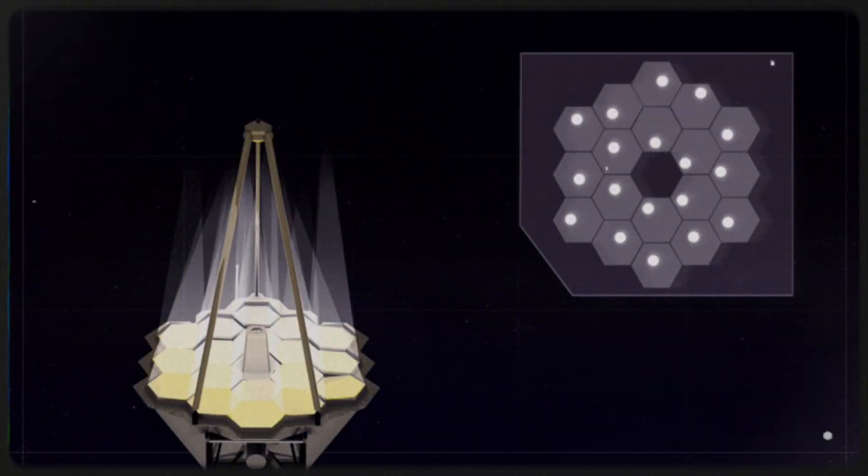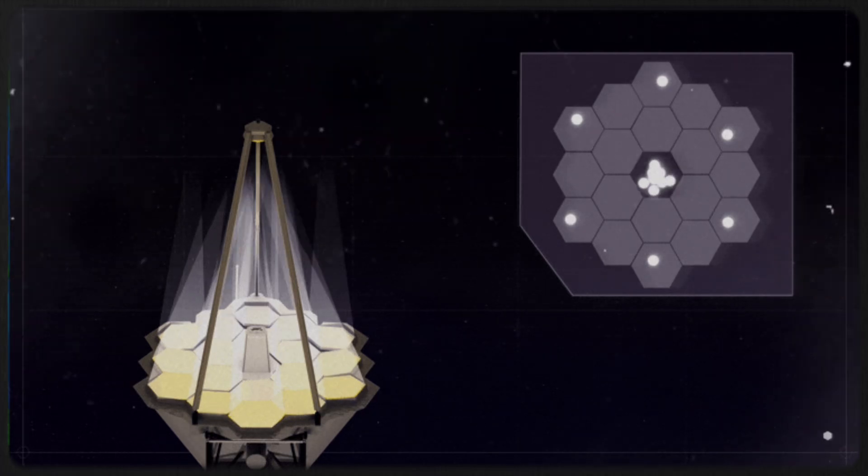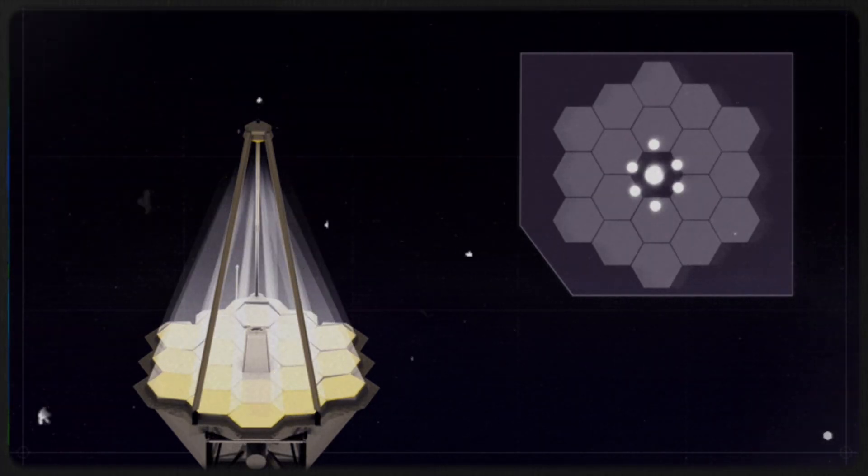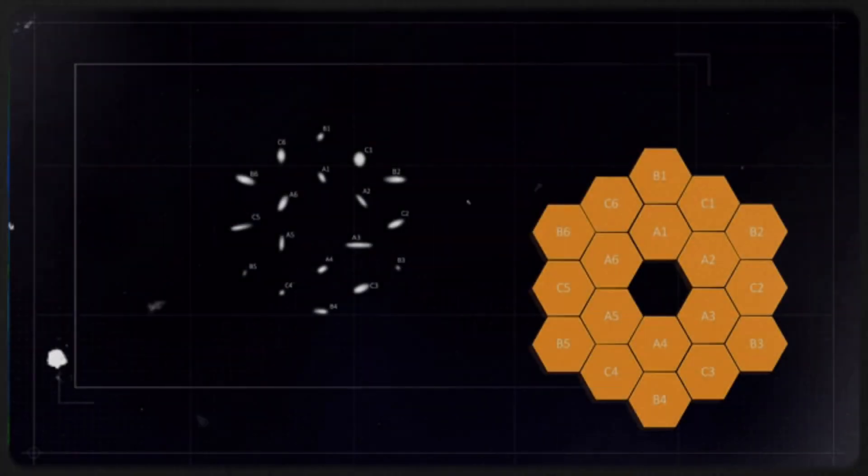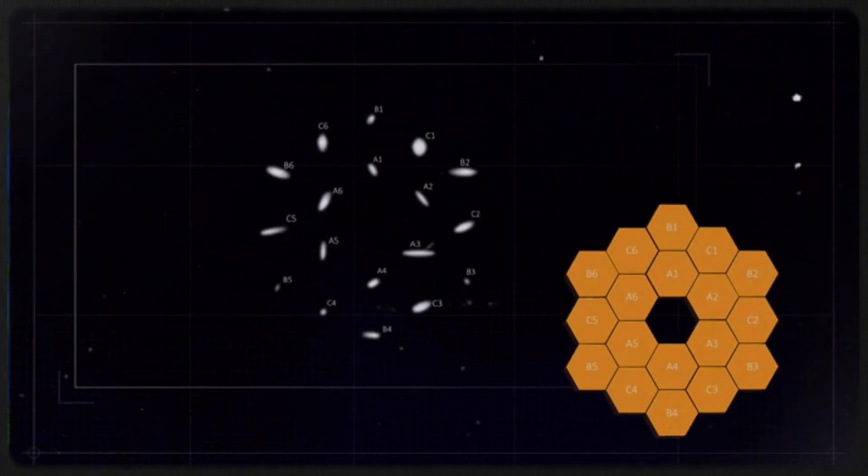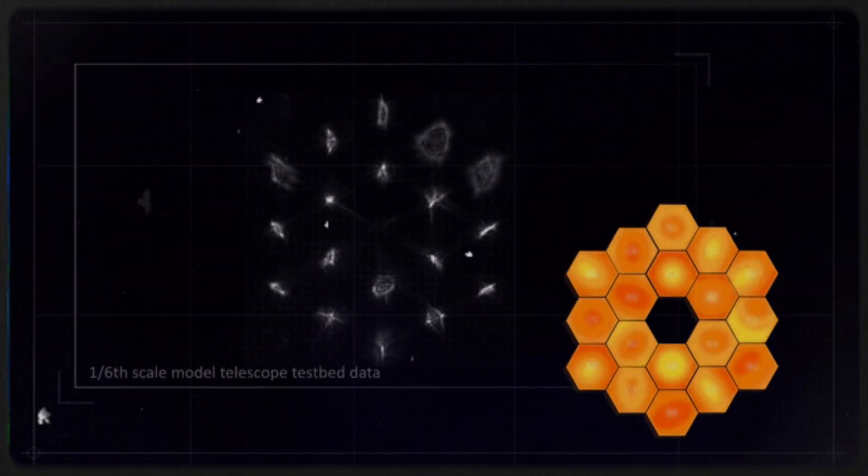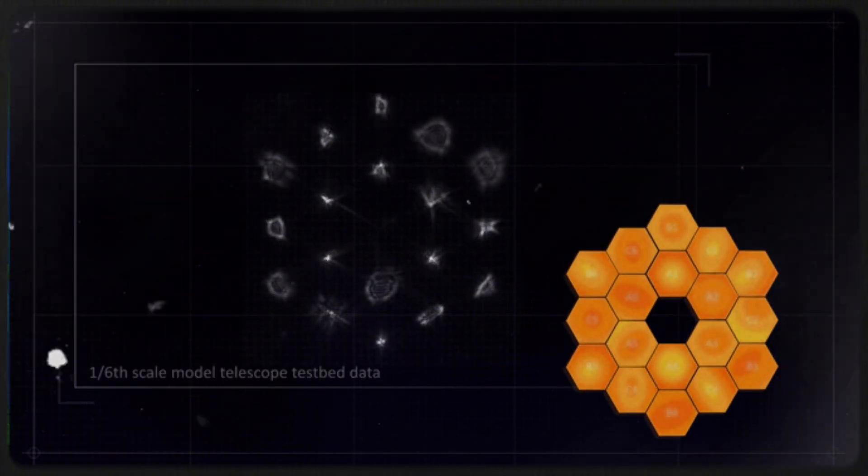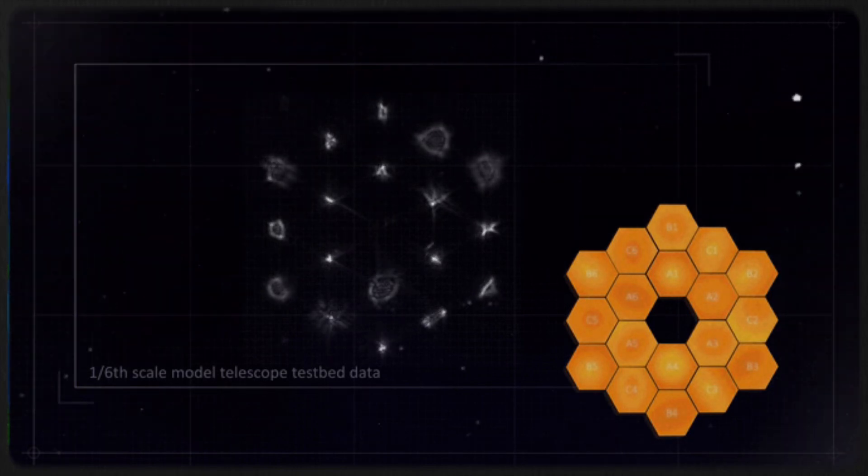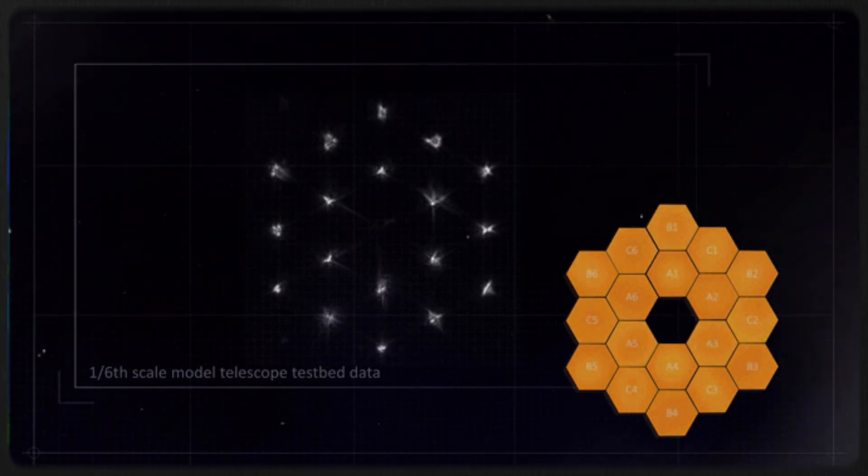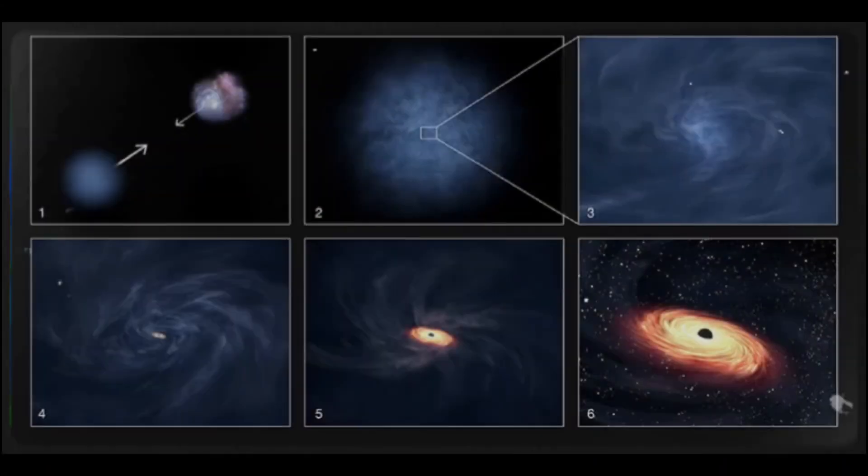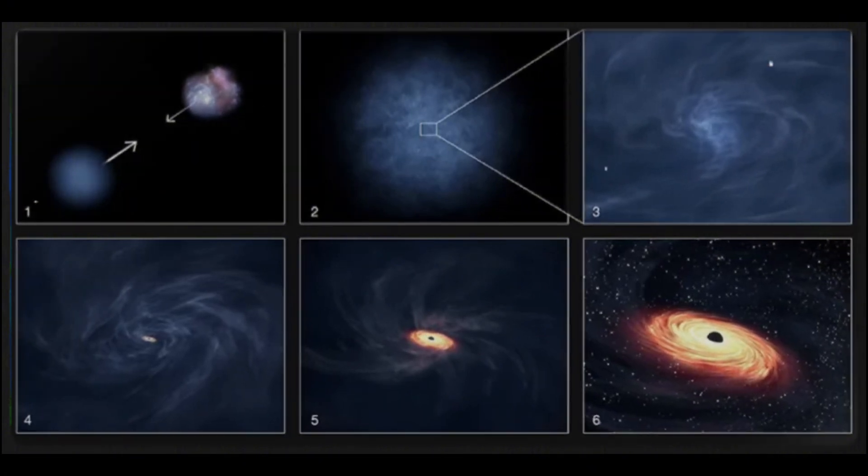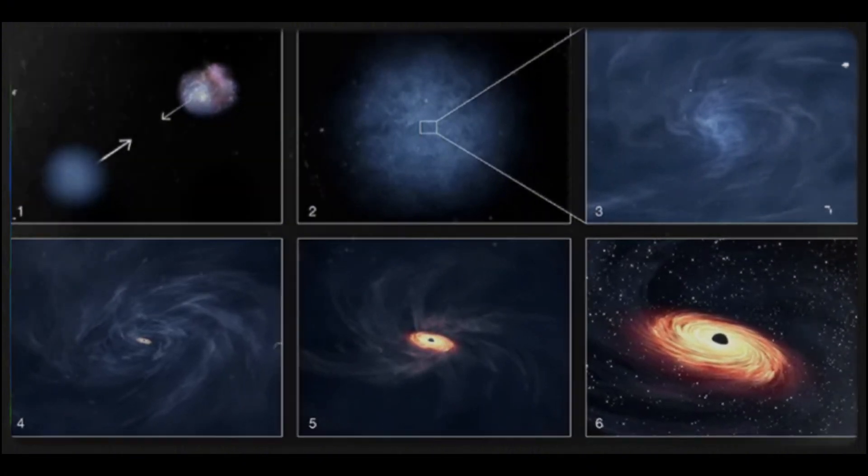Using the JWST's mid-infrared instrument and near-infrared camera, astronomers searched for black holes by analyzing light spectra and detecting weak radiation from hot matter around a black hole. This early radiation indicated the presence of a supermassive black hole, though the rapid formation of such black holes in the early universe remains a mystery.